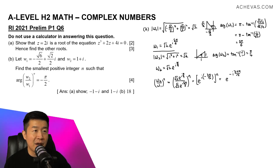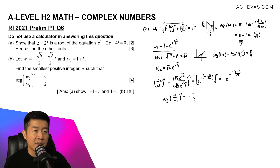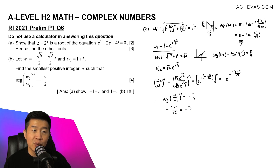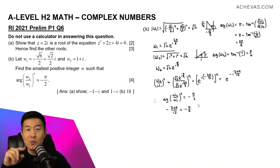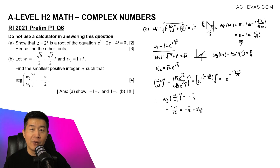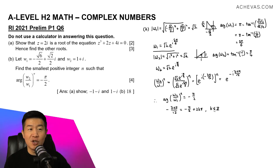We set the argument of (w2/w1)^n equal to −π/2. So −7nπ/12 = −π/2. But we must also account for the periodic nature of angles, since angles repeat every 2π. So we write: −7nπ/12 = −π/2 + 2kπ, where k is an integer, allowing for positive and negative integer multiples of 2π.